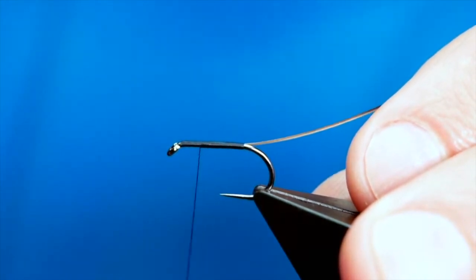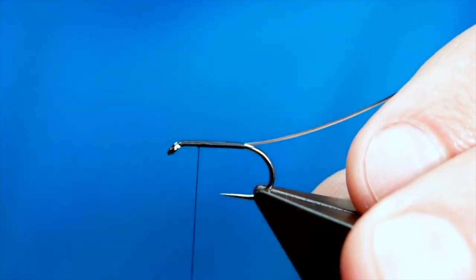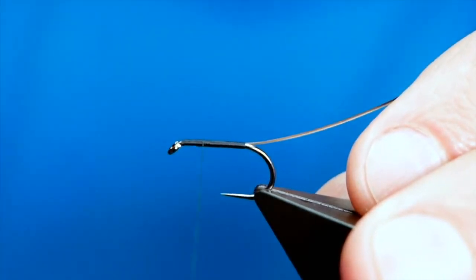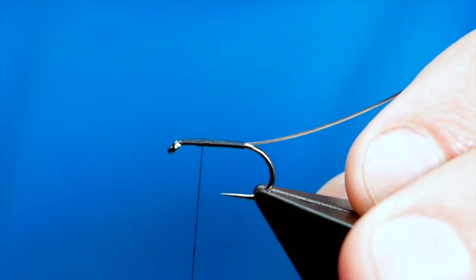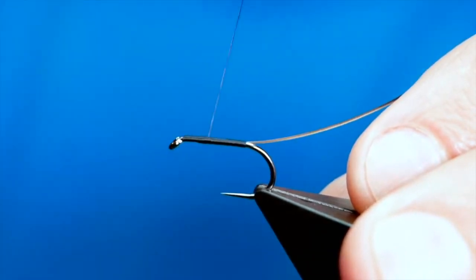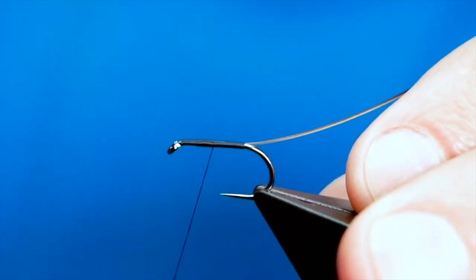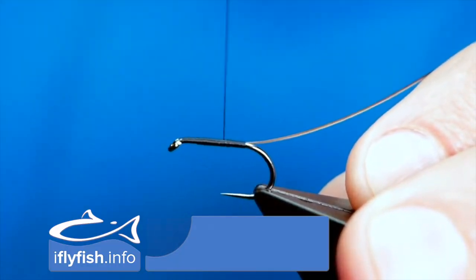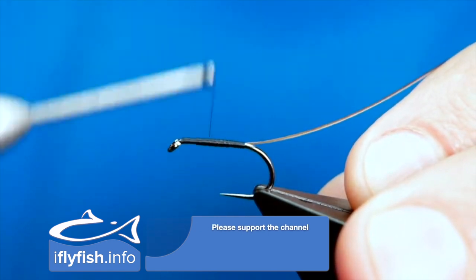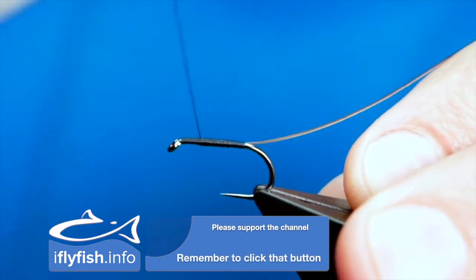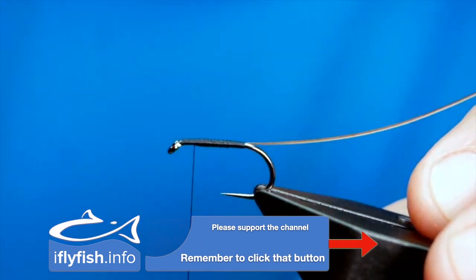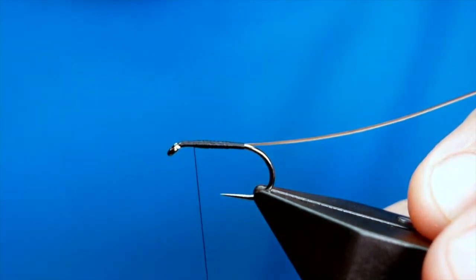So I'm giving it a twist anti-clockwise on the bobbin holder just to flatten out my thread and that will give you that nice, smooth body on your buzzer. I'm going to come all the way up to the thorax area and I like to put a little bit of a taper into my buzzers. So I'm just going to, again, give my bobbin a little twist anti-clockwise. So, I'm going to come back down, not right to the bottom this time, and I'm going to come up again to the thorax area. Now, I'm content that I've got that taper in there. Quite difficult to see on the camera, but it is there.